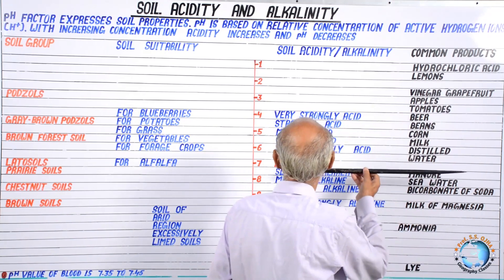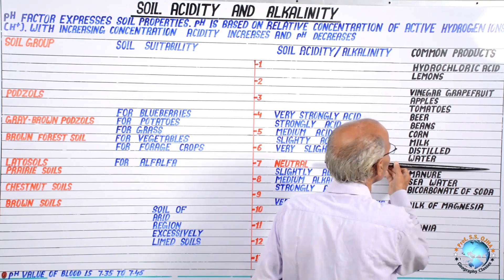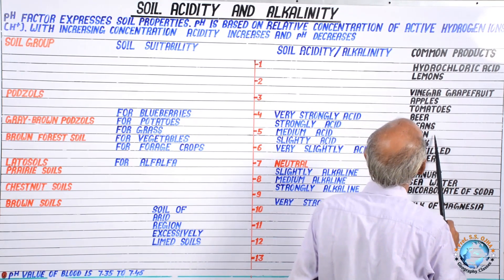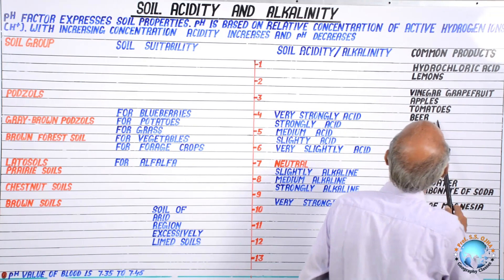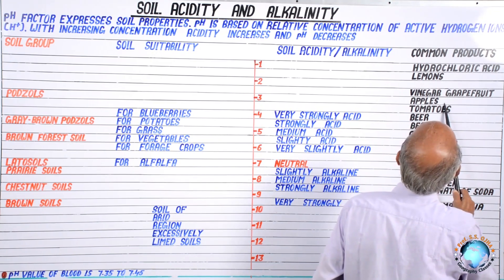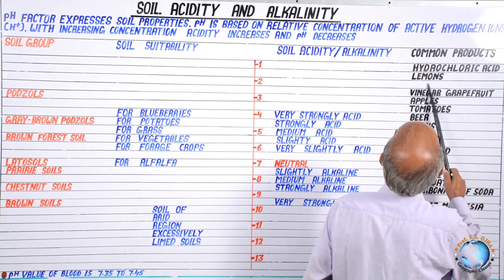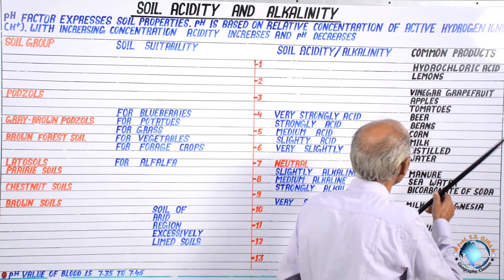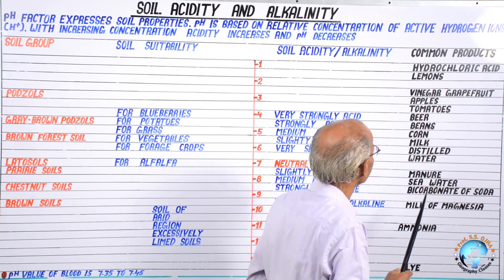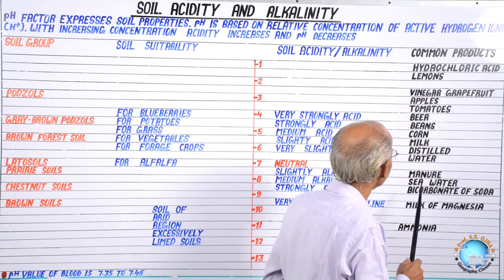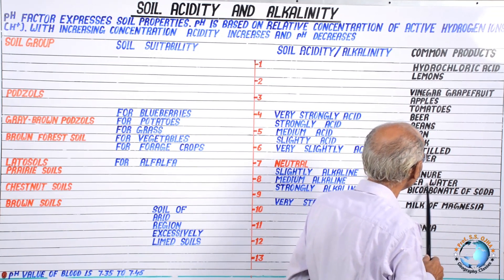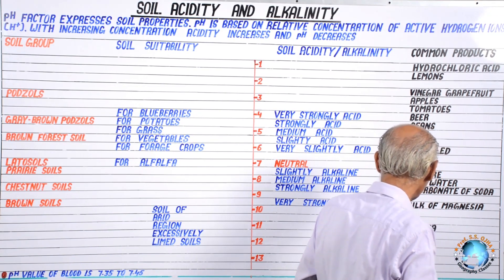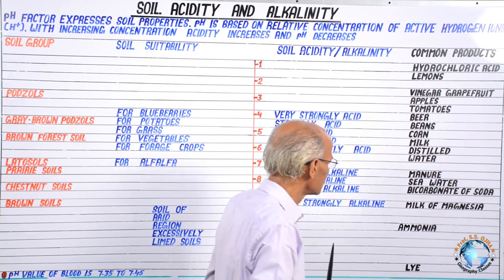From neutral towards the acidic side: distilled water is just slightly acidic, then milk, corn, beans, beer, tomato, apples, vinegar, grapefruit, and lemons — lemons being the most acidic. More acidic than lemons is hydrochloric acid. These represent increasing acidic substances on the pH scale.